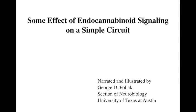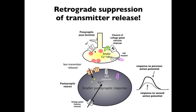In this movie, we're going to discuss some of the effects of endocannabinoid signaling on a very simple circuit. We have now seen how endocannabinoids are generated in the postsynaptic cell, how they work by way of retrograde signaling by diffusing out of the postsynaptic cell backward to the presynaptic terminal, and how they suppress transmitter release by closing voltage-gated calcium channels.